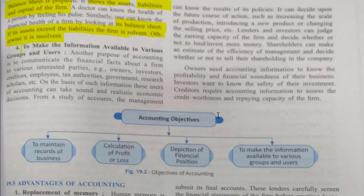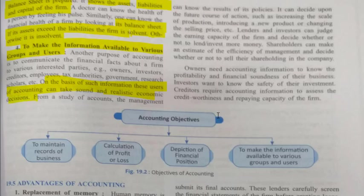Information regarding the business is present in the final accounts — that is, the profit and loss account and balance sheet. On the basis of such information, users of accounting can take sound and realistic economic decisions. For example, owners can decide whether to make changes in the business or invest more, and tax authorities can determine how much tax to charge.